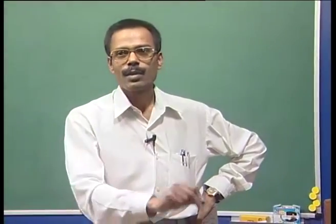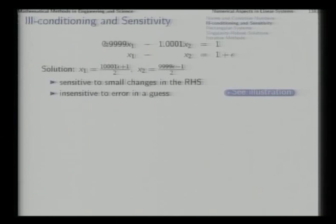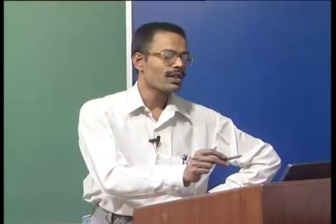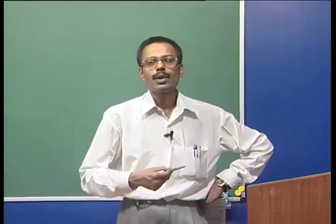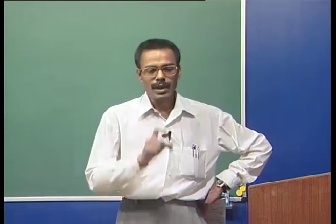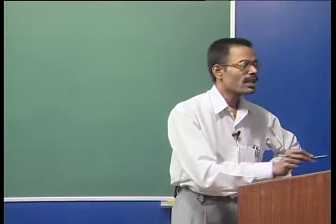Why is this dangerous? Because all numbers we get in practical situations are results of measurement or other calculations, and any measured data or result of calculations will be susceptible to some small errors. That means with small errors in the data, the final solution will suffer badly — this is the result of ill-conditioning. Apart from being sensitive to small changes in the right-hand side, there will be another bad result: small mistakes in the guess of the solution will not be identified or captured in this kind of system.